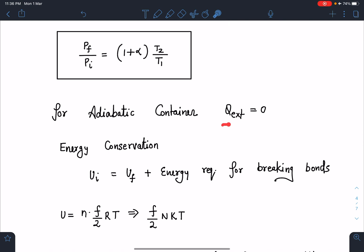Here you can write for adiabatic container this Q_external is also zero, and since the container is rigid, work done also can be taken as zero. So we can apply energy conservation: U_initial = U_final + energy required for breaking the bonds.